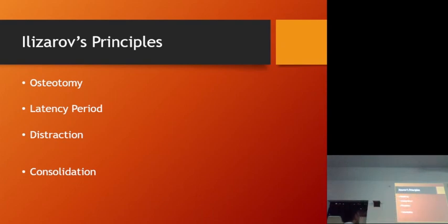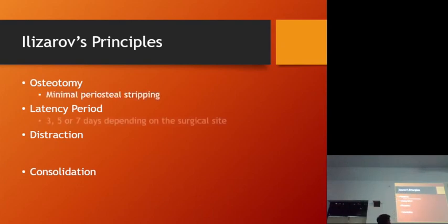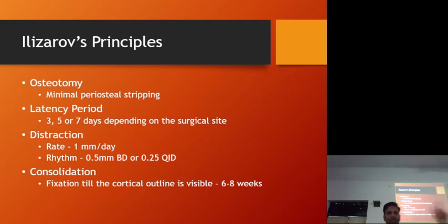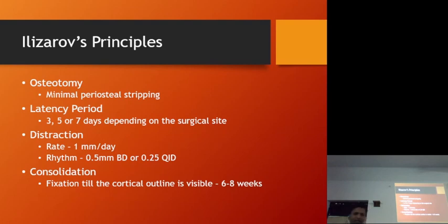Consolidation: we start seeing the cortical outline of the bone on radiographs, usually seen at six to eight weeks. These are the basic Ilizarov principles.